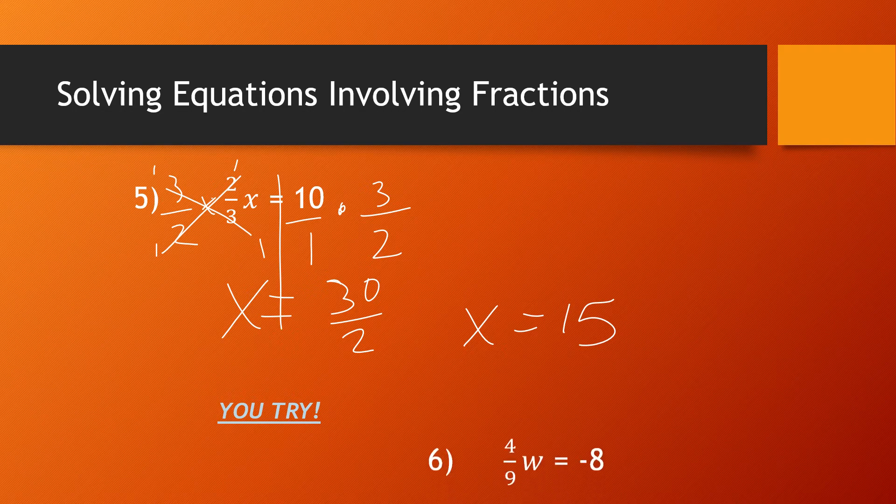Go ahead and try this one: 4/9 w equals negative 8. You might want to pause the video to show that work. Remember, multiply by the reciprocal — and you get w equals negative 18.